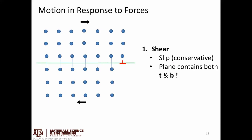Slip occurs when both the tangent vector and the Burgers vector are in the same plane. The Burgers vector for this edge dislocation goes in one direction, and the tangent vector — looking down the dislocation line — is either going into the plane or coming out of it.